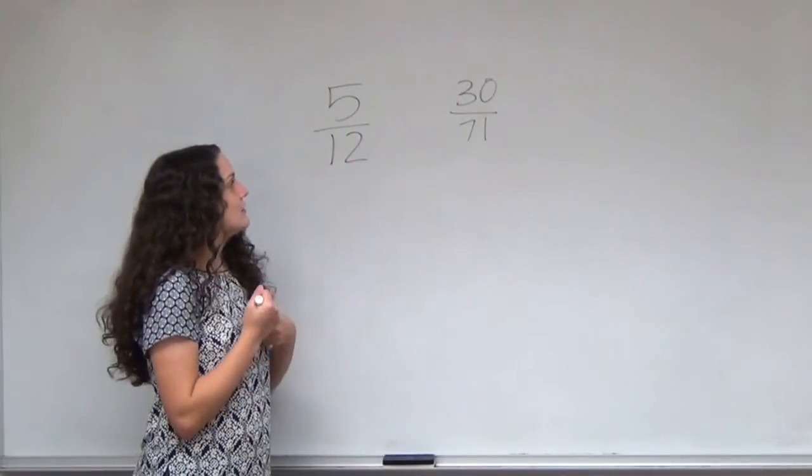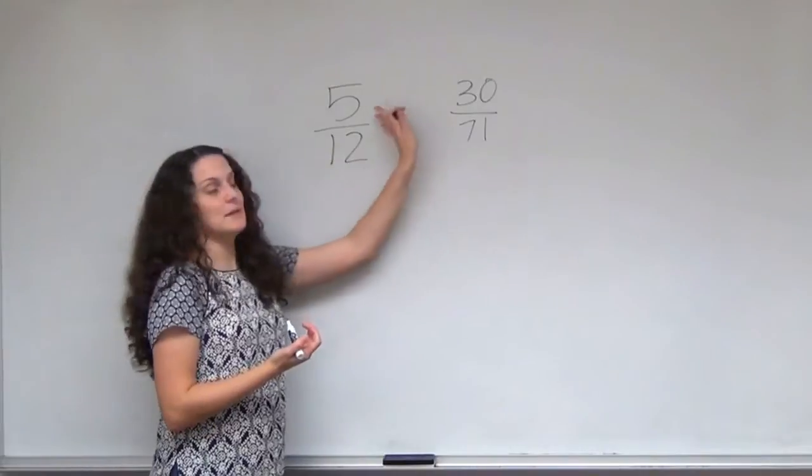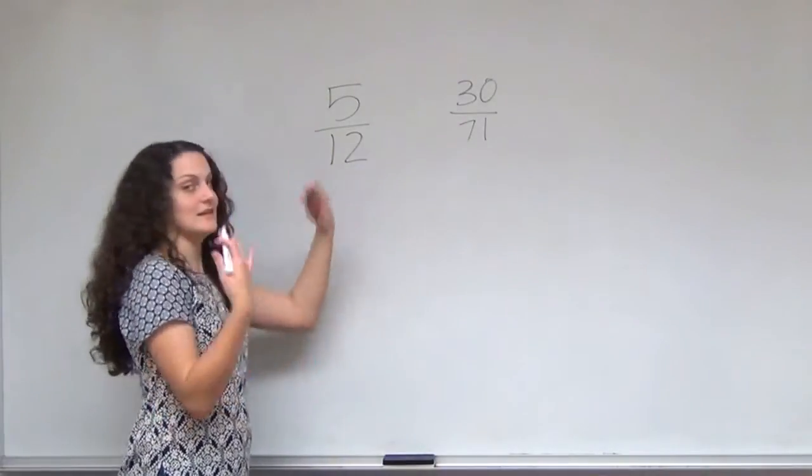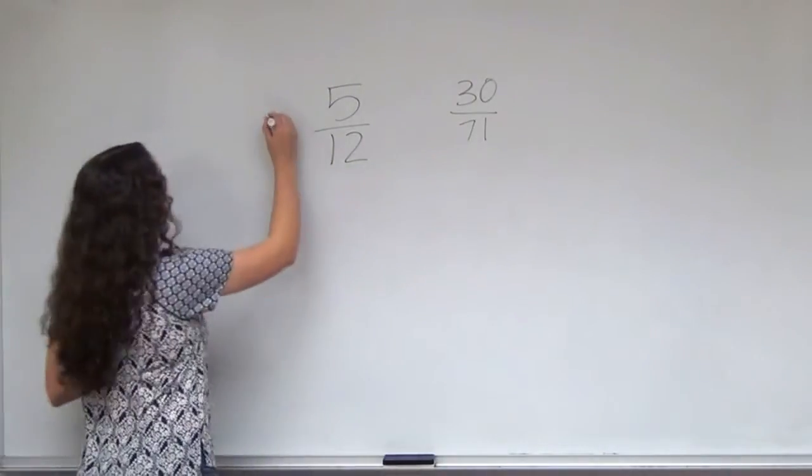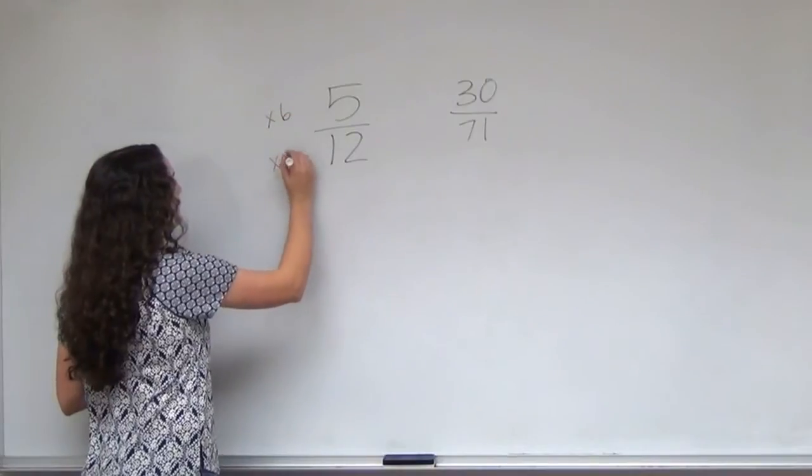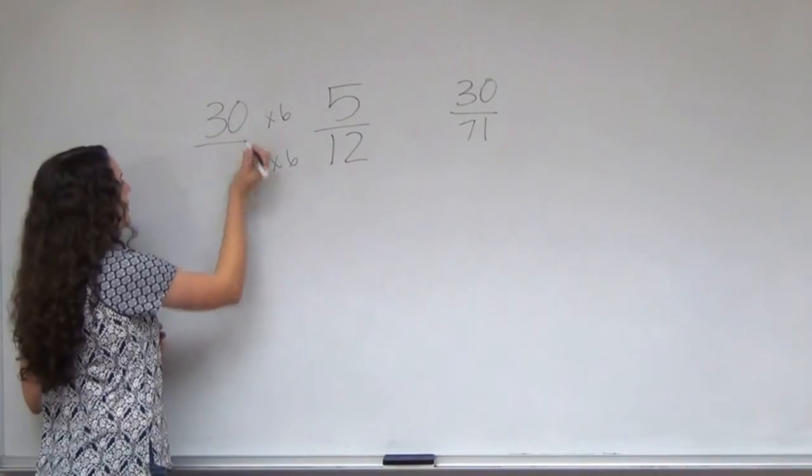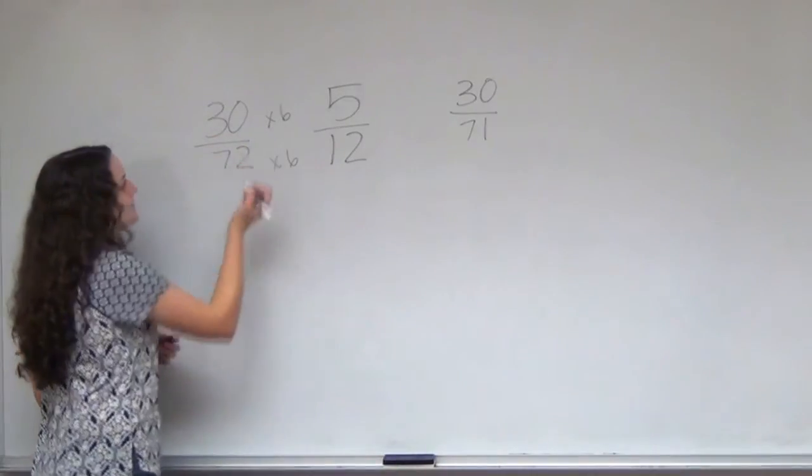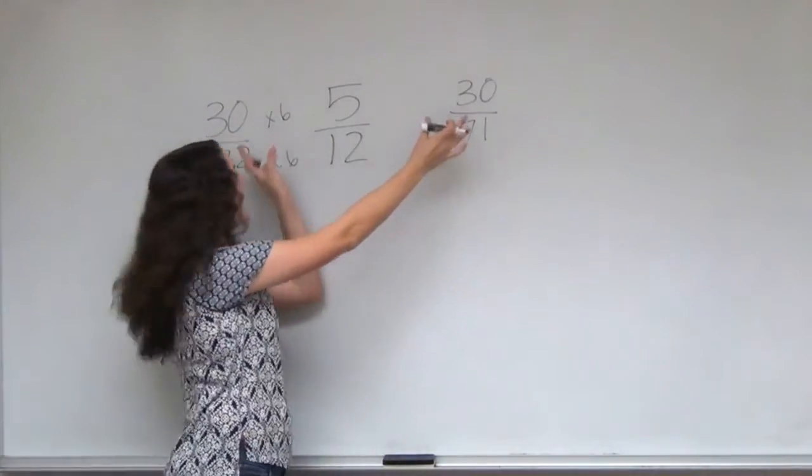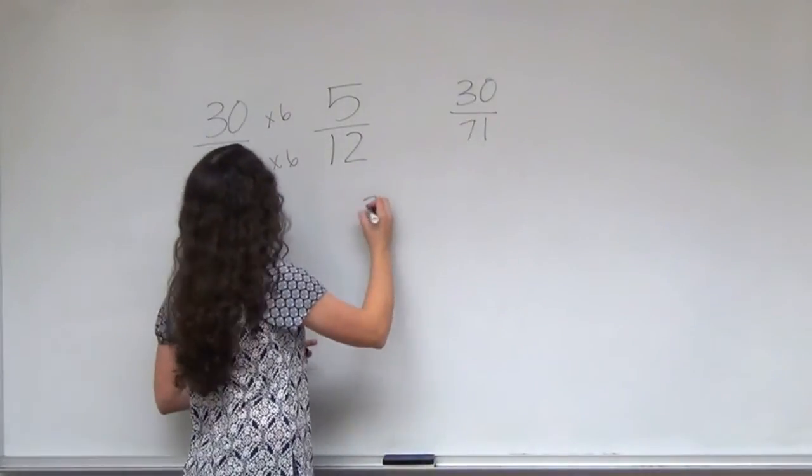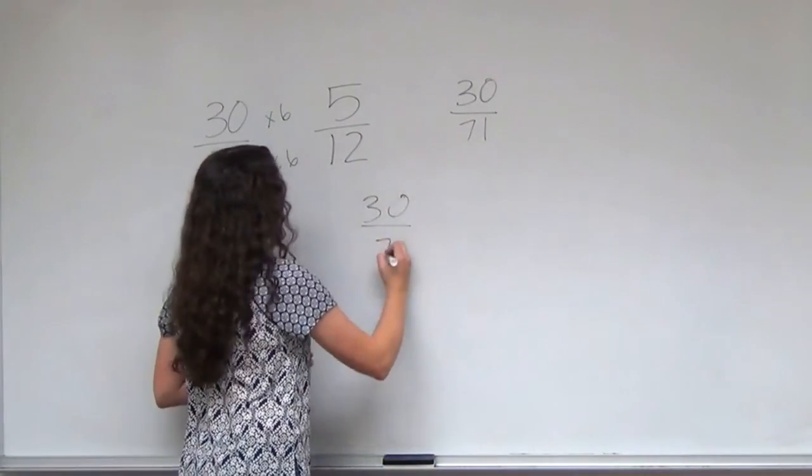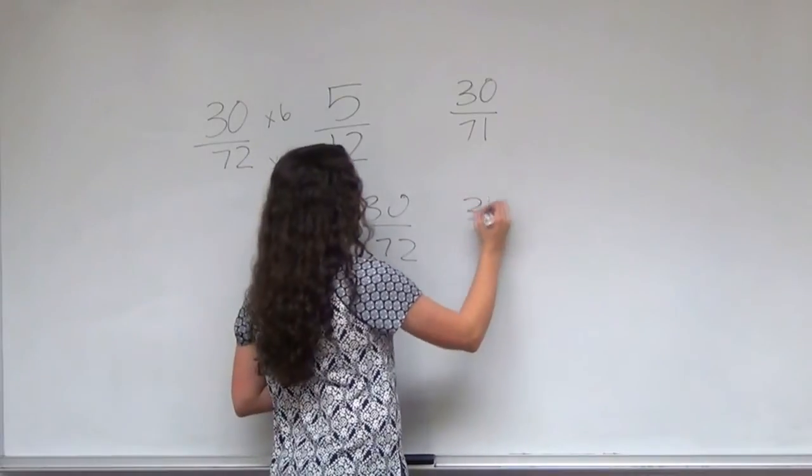And so I thought, well let me try to make the numerators match, because I can go from there. So I multiplied the top and bottom by 6 and got 30 over 72. So now my numerators match, and my denominators are just slightly different, so it became a new comparison.